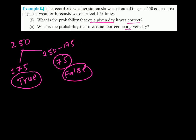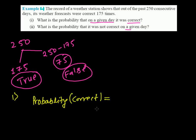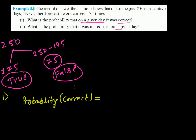Let me do them one by one. First condition: the probability that their forecast will be correct. As we have been learning, the probability of any event equals the total favorable outcomes divided by the total number of trials or total experiments.